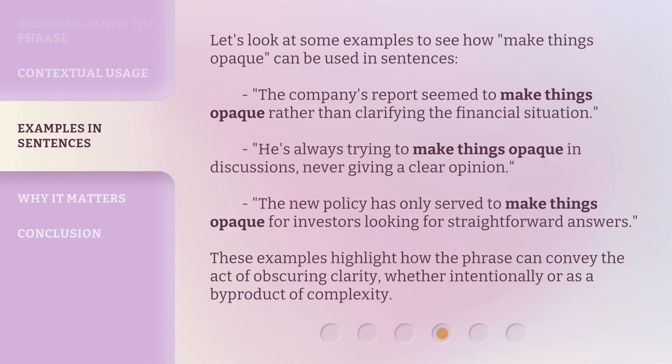Let's look at some examples to see how 'make things opaque' can be used in sentences. The company's report seemed to make things opaque rather than clarifying the financial situation. He's always trying to make things opaque in discussions, never giving a clear opinion. The new policy has only served to make things opaque for investors looking for straightforward answers. These examples highlight how the phrase can convey the act of obscuring clarity, whether intentionally or as a byproduct of complexity.